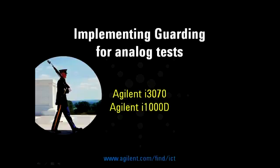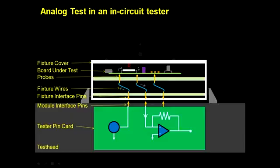In a typical in-circuit test setup, probes and wires connect the device under test to the measurement circuit on the tester. To understand better about guarding, let's start with an example of a resistor test setup.